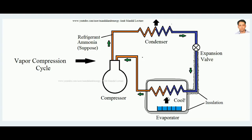In the evaporator, the refrigerant absorbs the latent heat of vaporization and again becomes vapor. It enters the evaporator in liquid form and comes out in vapor form. Since it is absorbing latent heat, the evaporator region cools — this is where the actual cooling action takes place. This vapor ammonia then goes back to the compressor, which compresses it, sends it to the condenser, and the cycle repeats.